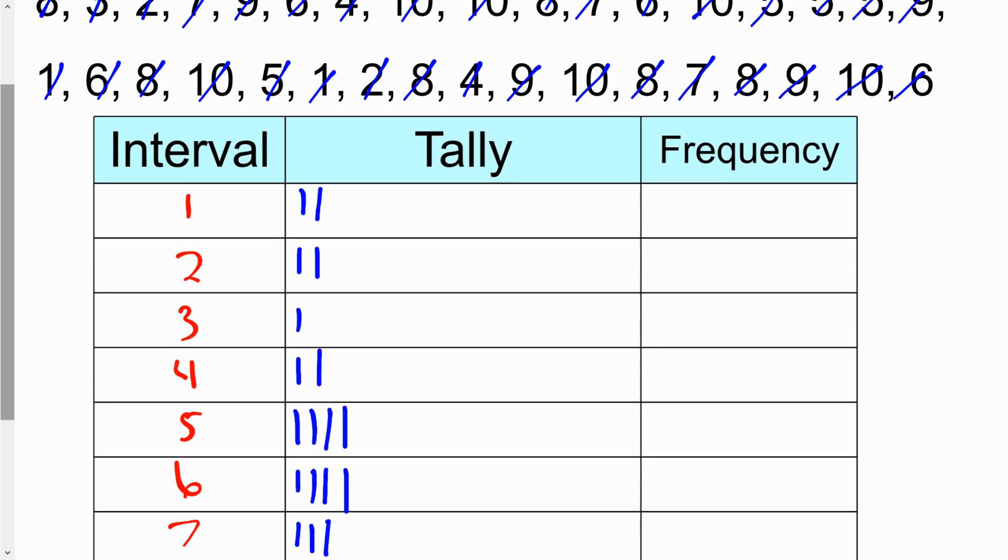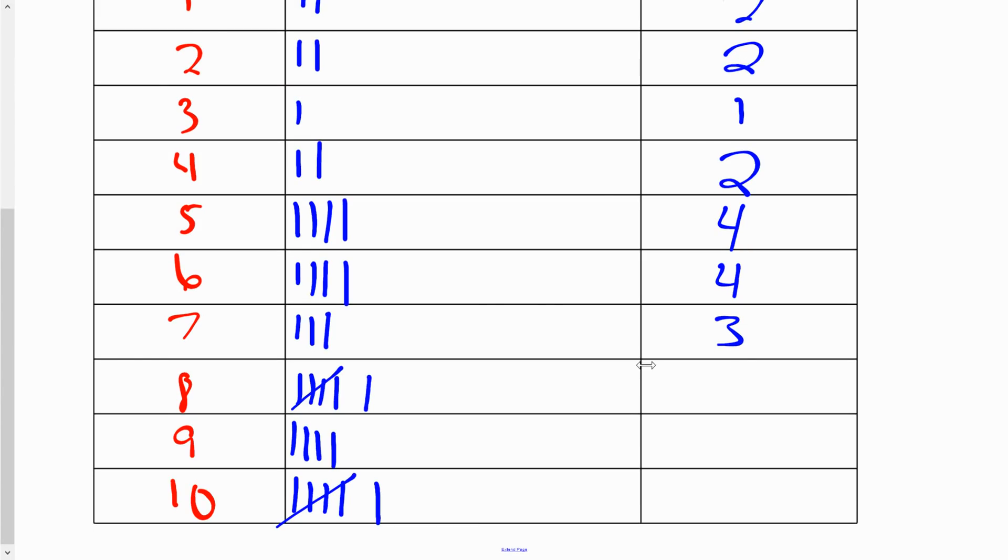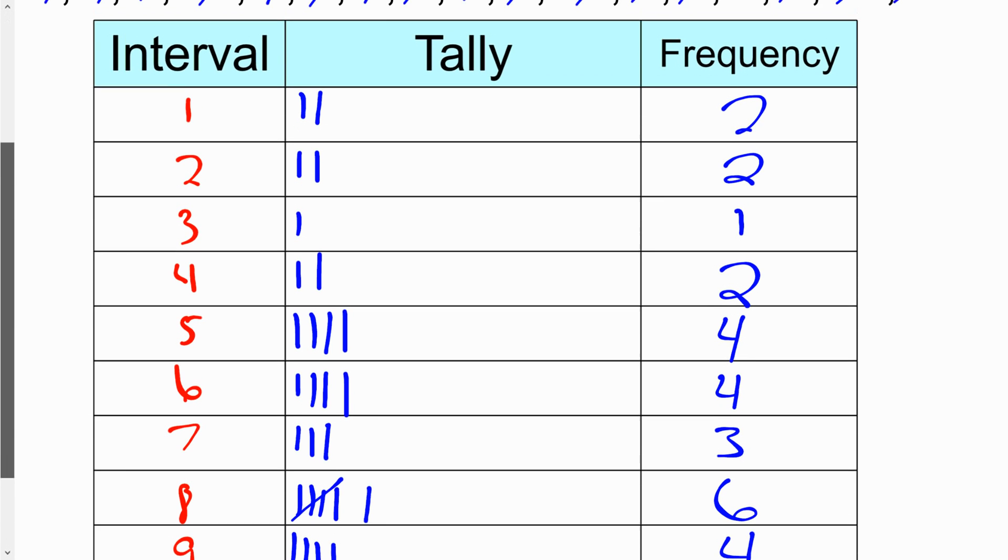Alright, we're going to fill out our frequency. We've got two 1's, two 2's, one 3, two 4's, four 5's, we've got four here, we've got three 7's, we've got six 8's, four 9's and six 10's. So you should have a frequency table that looks a lot like this.